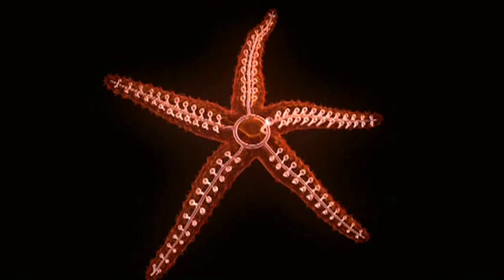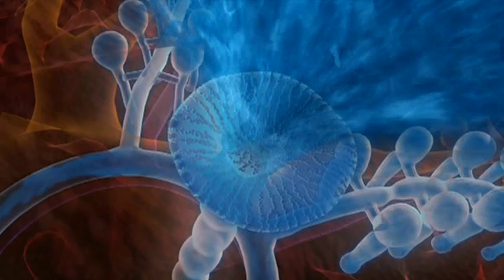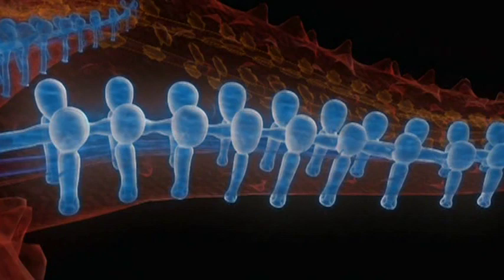The tube feet of sea stars are inflated by water, drawn into the body through a single opening called a sieve plate. The water fills the five radial canals, which run down the length of the arms, forming a hydraulic system.